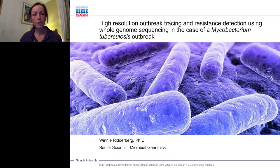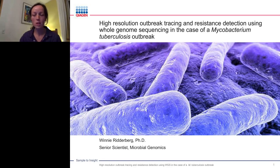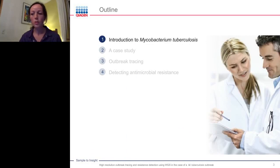Welcome everyone to this session. I will present how we have used whole genome sequencing for investigating an outbreak of Mycobacterium tuberculosis, and for detecting antimicrobial resistance using tools of Chiagen Microbial Genomics ProSuite. I'll start with a brief introduction to Mycobacterium tuberculosis, before moving on to the case study, and finally presenting results on outbreak tracing and detecting antimicrobial resistance.